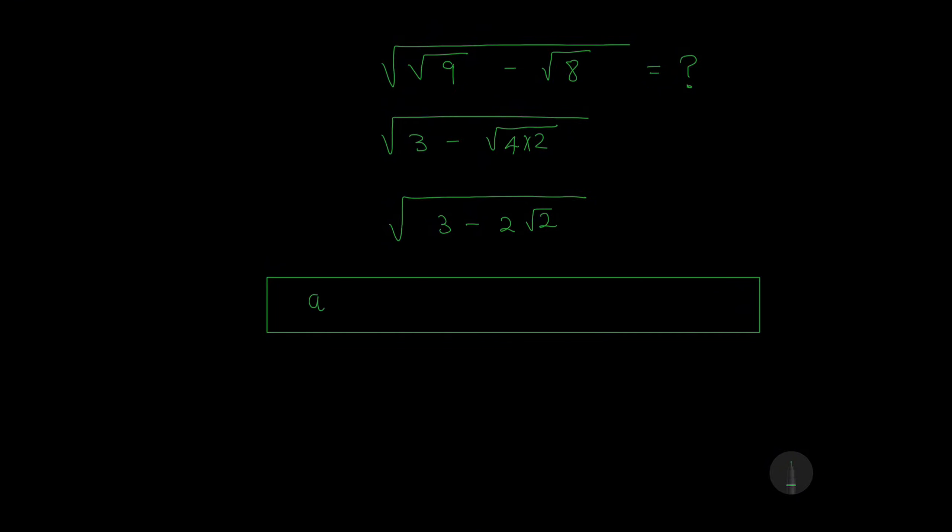a² minus 2ab plus b² is equal to (a minus b) raised to power 2.